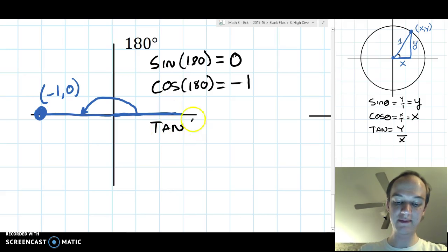And tangent of 180, 0 over negative 1, y over x. So, tangent of 180 is going to be 0.